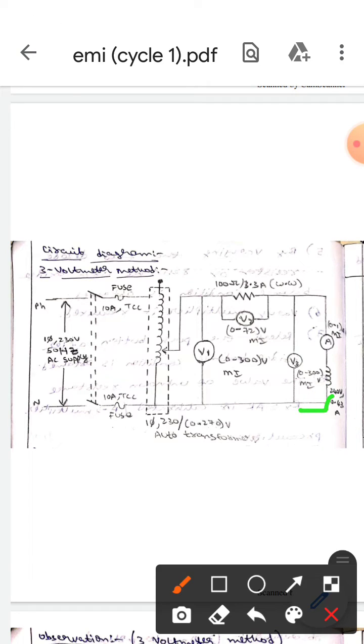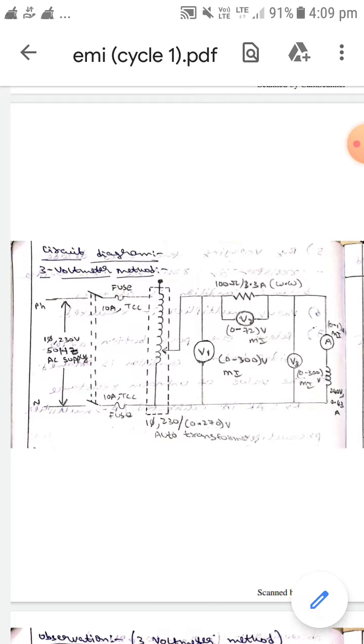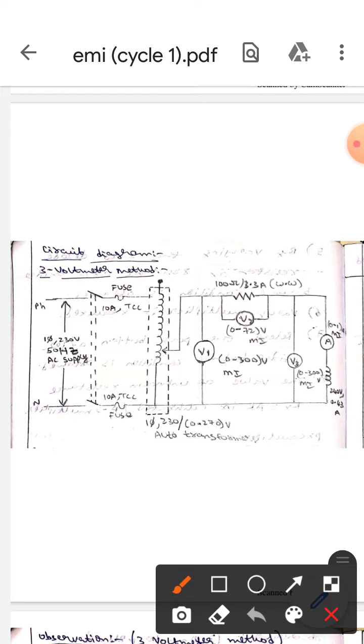And this choke coil is connected to the V3 of 300 and V1 of 300. Then these two wires are connected to the auto transformer again. This is all about the circuit connection of three volt meter method for finding the parameters of choke coil.